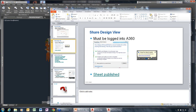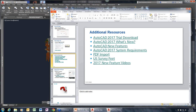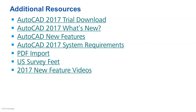In the additional resources, there's a link to the trial download if you don't have 2017 yet. There are links to the new features, videos about the new features, and system requirements. There is a known issue with PDF import when converting to geometry — you need to make sure you have a full path to the PDF file, not a relative path. There's an article that talks about that. There's also a link to what a U.S. survey foot is, and a link to all the videos that colleague Heidi put together showing many of these new features.